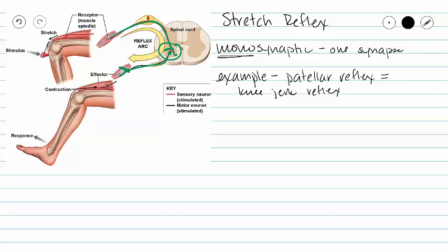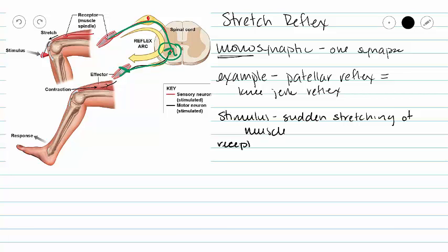In this reflex, our stimulus is going to be a sudden stretching of our muscle. Our receptor is called a muscle spindle, which is located inside of your skeletal muscle. That information gets carried into our spinal cord, and the motor command is going to contract that muscle to keep us from falling down.